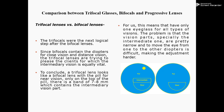Trifocal lenses versus bifocal lenses. Trifocal lenses were the next logical step after bifocal lenses. Since bifocal lenses contain the diopter for close vision — meaning near vision — and distance vision, trifocal lenses try to accommodate clients for whom intermediate vision is equally important. A trifocal lens looks like a bifocal lens, with a segment for near vision, but on top of that segment there is a band of 7 to 8 mm which contains the intermediate vision zone.